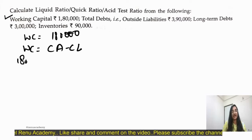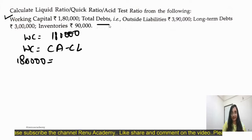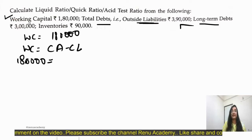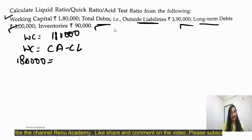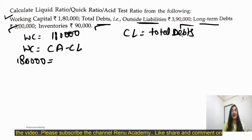Here we have a figure of 1,80,000. We don't know the current asset nor the current liability. In this question, total outside liabilities are 3,90,000, long-term debts are 3,00,000, and inventories are 90,000. Current liability equals total debts minus long-term debts, since total debts include both long-term and short-term.